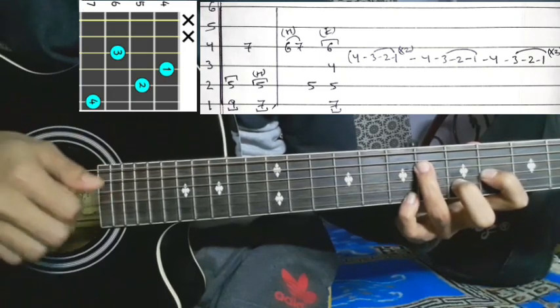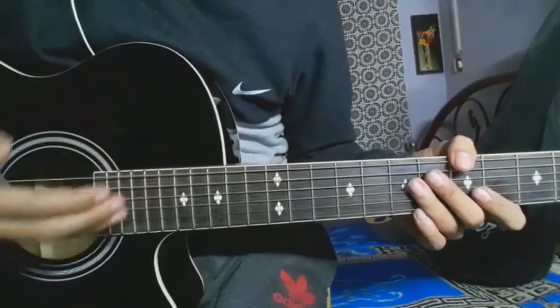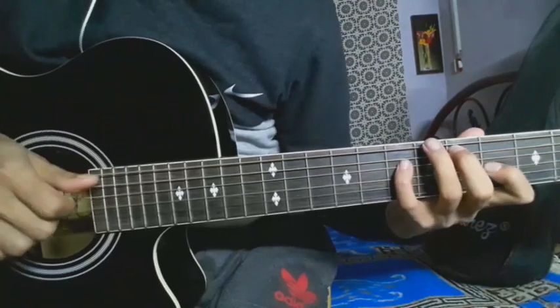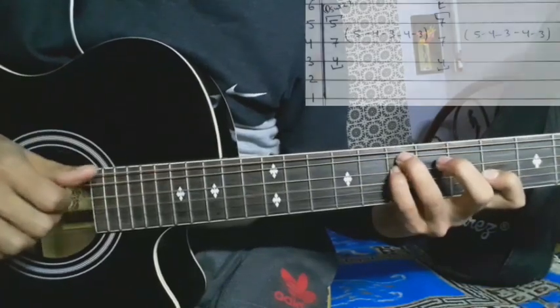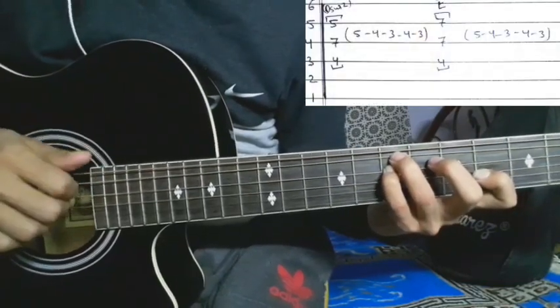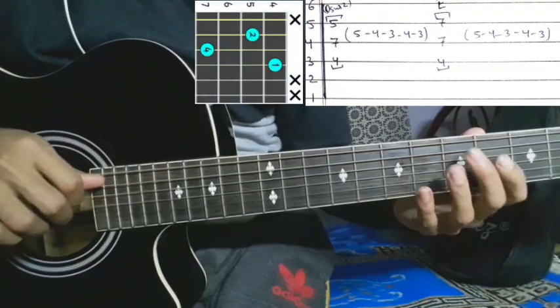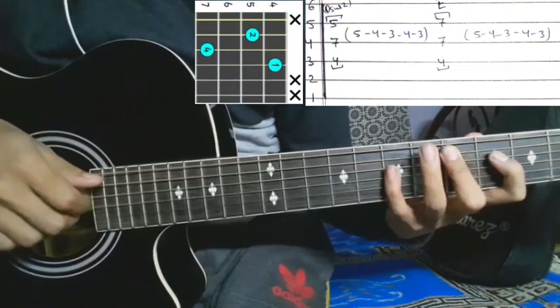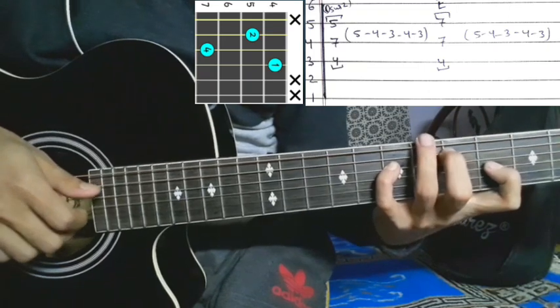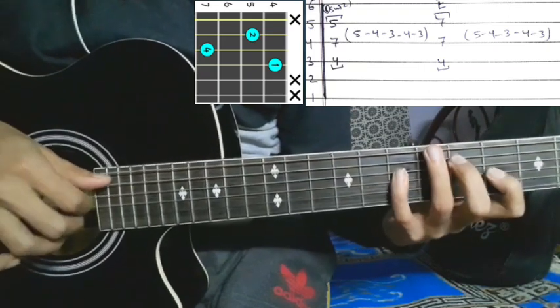Fifth section complete. Now the sixth and last section with blocking. The sixth section position is: fifth string open, fourth string seventh fret, third string fourth fret. That's the plucking pattern: five-four-three-four-three.